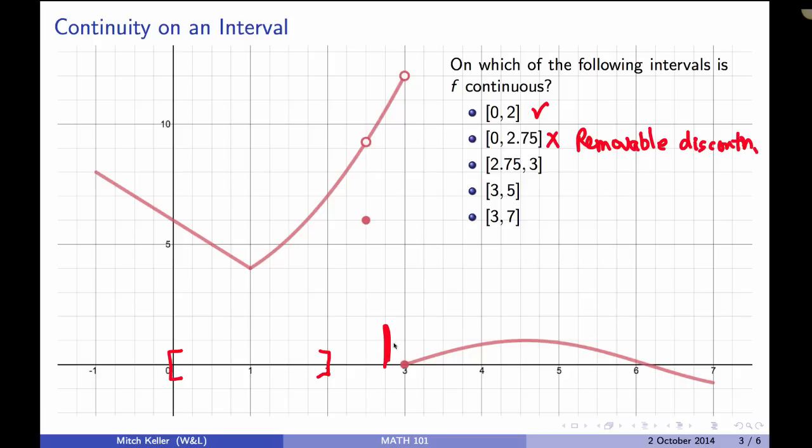What about 2.75 to 3? That'd be this little snippet. Well, we're all good except for that very last criterion, because we have this jump, and what's going on here is the limit as x approaches 3 from the left of f(x) is not equal to f(3). So this gets an x as well. It doesn't meet the last criterion for continuity.